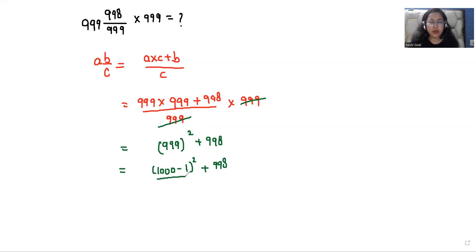Here we can use the formula a minus b whole square, that is a square minus 2ab plus b square.